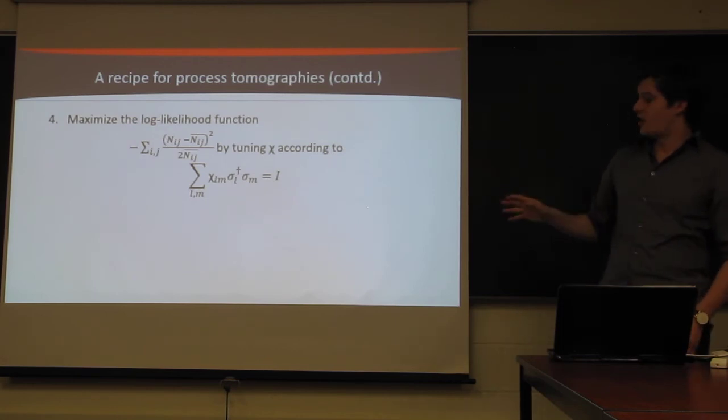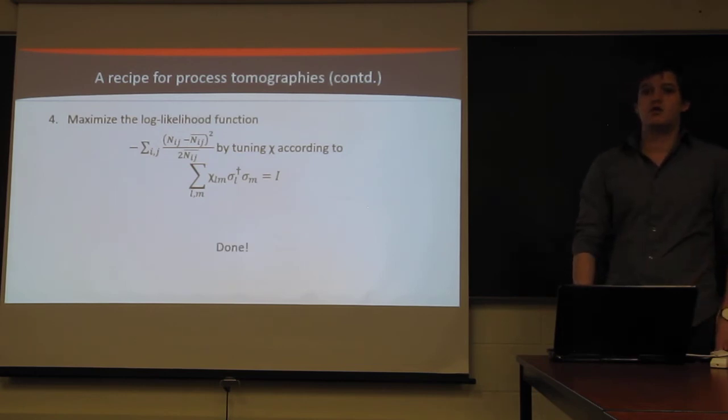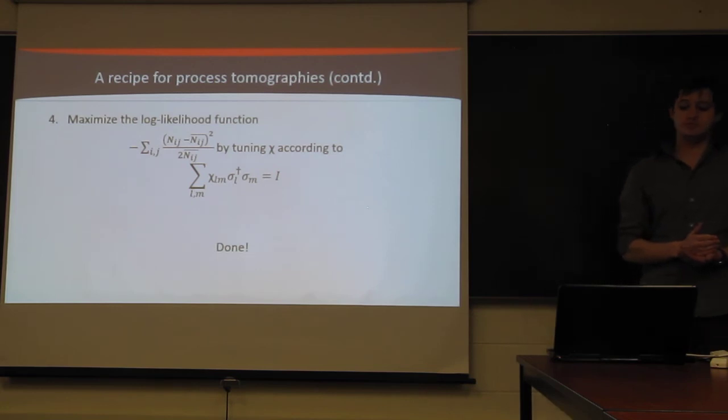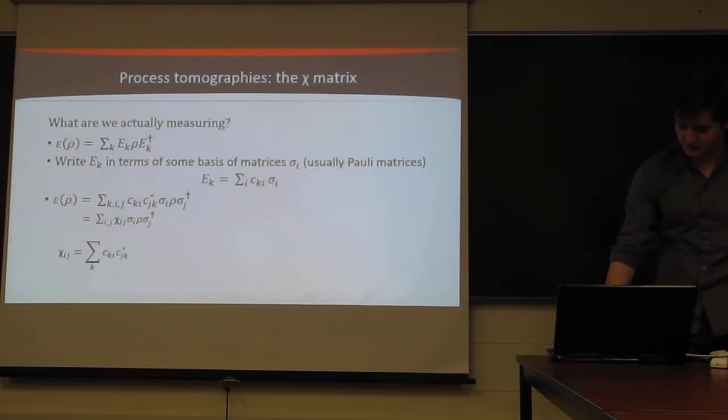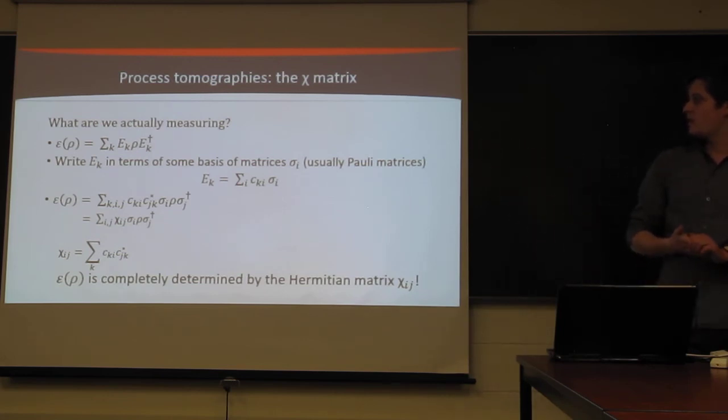And once you tune all of the 16 variables of your chi matrix to maximize the probability, that will output your chi matrix, and then you're done. You have a chi matrix completely and uniquely established for your process. And if you ever want to see how it affects a given quantum state, you can again just construct it using the Pauli basis that you have, and construct it using the formula we discussed back here. All right, so that's all I have. Are there any questions?